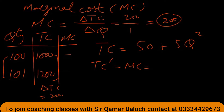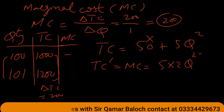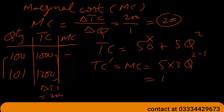When taking the derivative, the constant term is cancelled and becomes 0. For the term 5q squared, we bring the power down and multiply: 5 times 2 gives 10, and we reduce the power by one, so 2 minus 1 equals 1. Since power of 1 need not be written, the marginal cost is 10q.